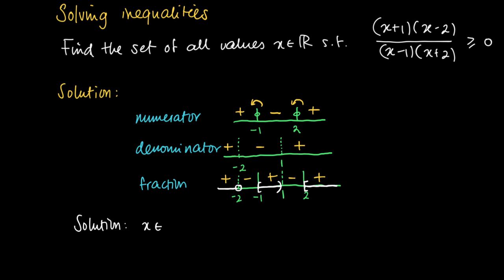As a solution we find all x in the interval (-∞, -2), where -2 is excluded, so we write this with open brackets on both sides. Union the set [-1, 1), where -1 is included so we write a square bracket, and 1 is excluded so we write an open bracket. Union [2, +∞), where 2 is included so we write a square bracket on the left-hand side and an open bracket on the right.